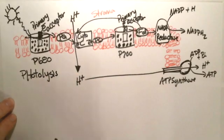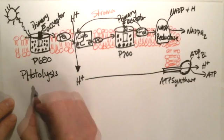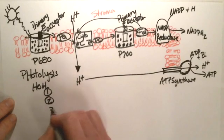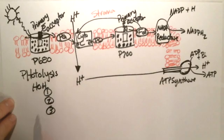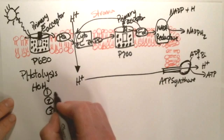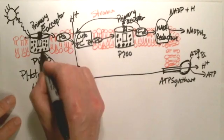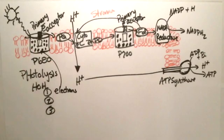Now, photolysis is the splitting of water by light. So, here we've got our water, and it's going to split it and knock it into three different pieces. One of these pieces is going to be an electron or electrons, and this is what's used to replace the electrons that were lost up here in P680.